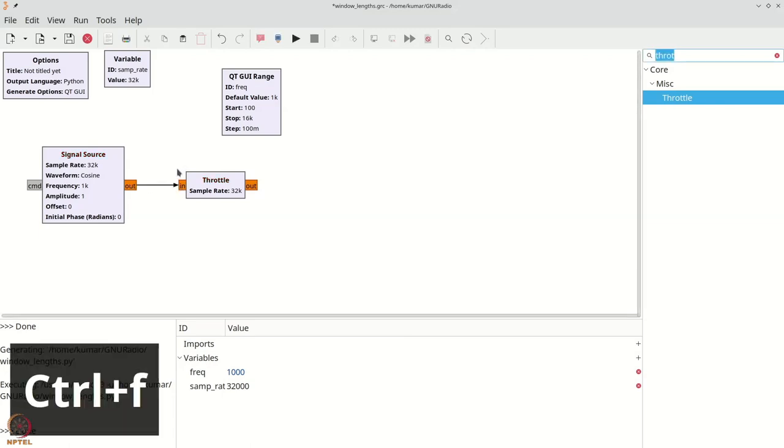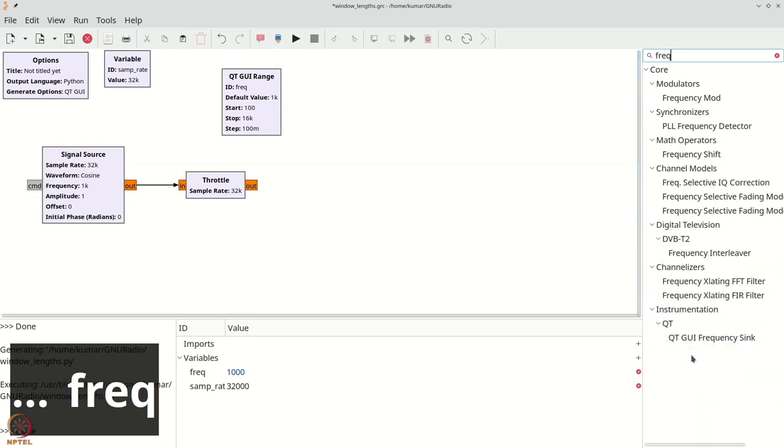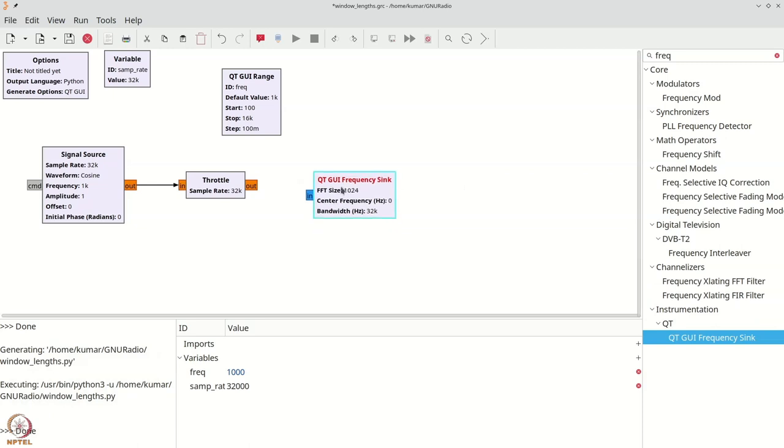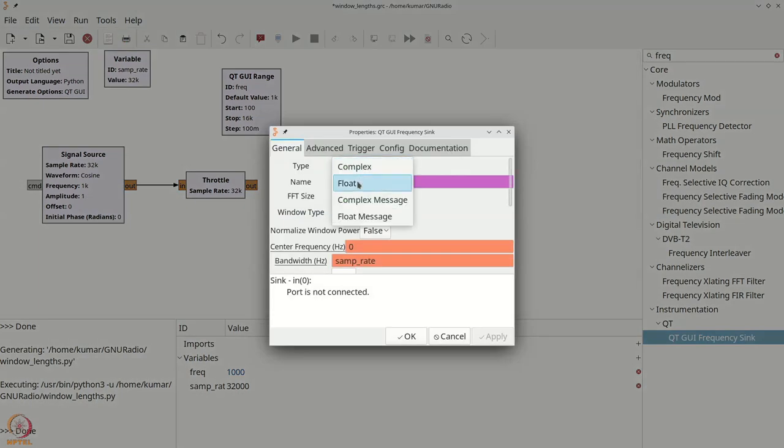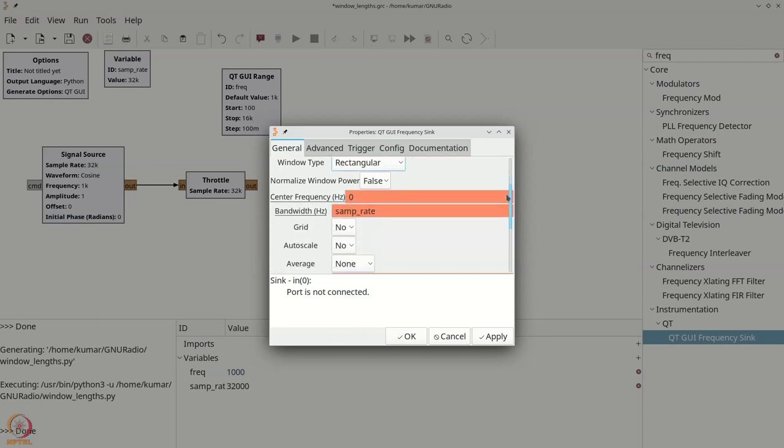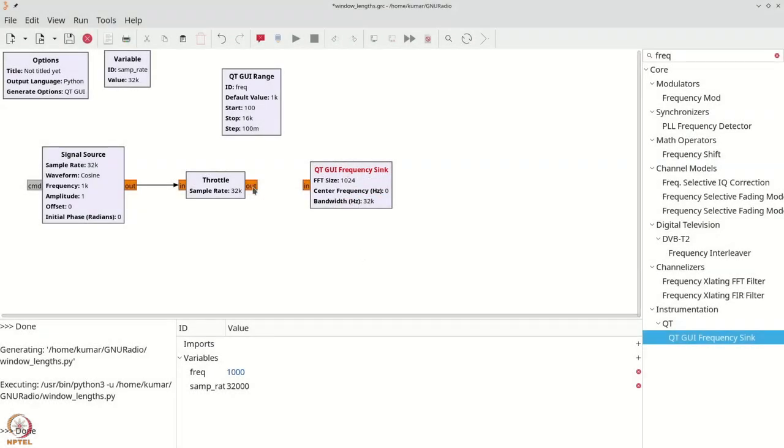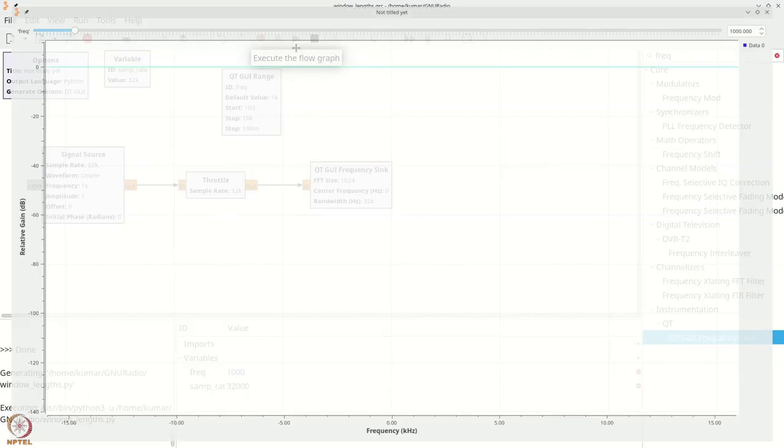And the final component that we will need is the frequency sink. So we press control F or command F and type FREQ. Grab the QTGUI frequency sink. Again, change type to float. We will also change the window type to rectangular so that we don't have any extra effects in the spectrum. We will also add a grid and set auto scale to yes. We will then say OK. Connect the throttle output to the frequency sink. And we then run our flow graph.